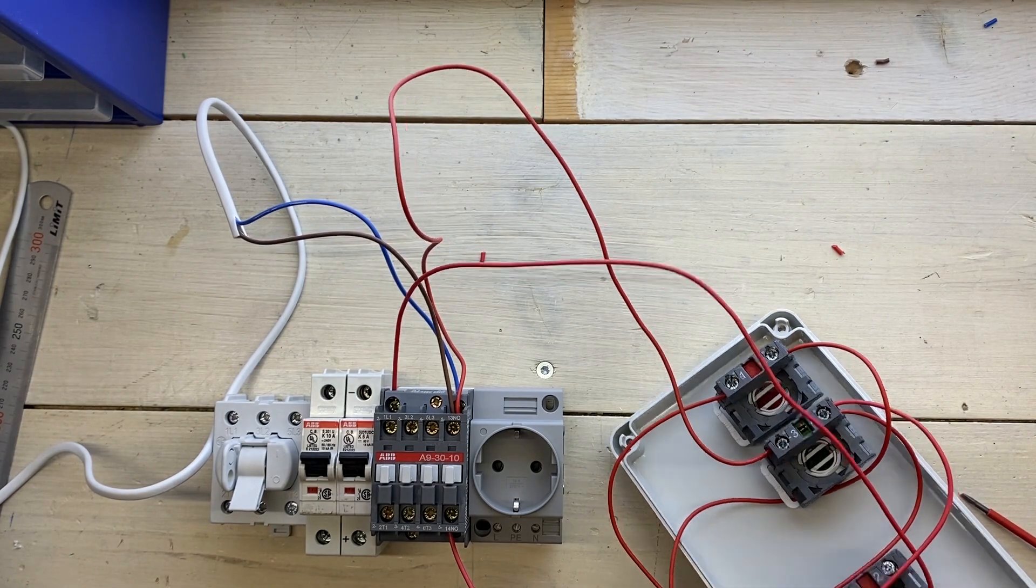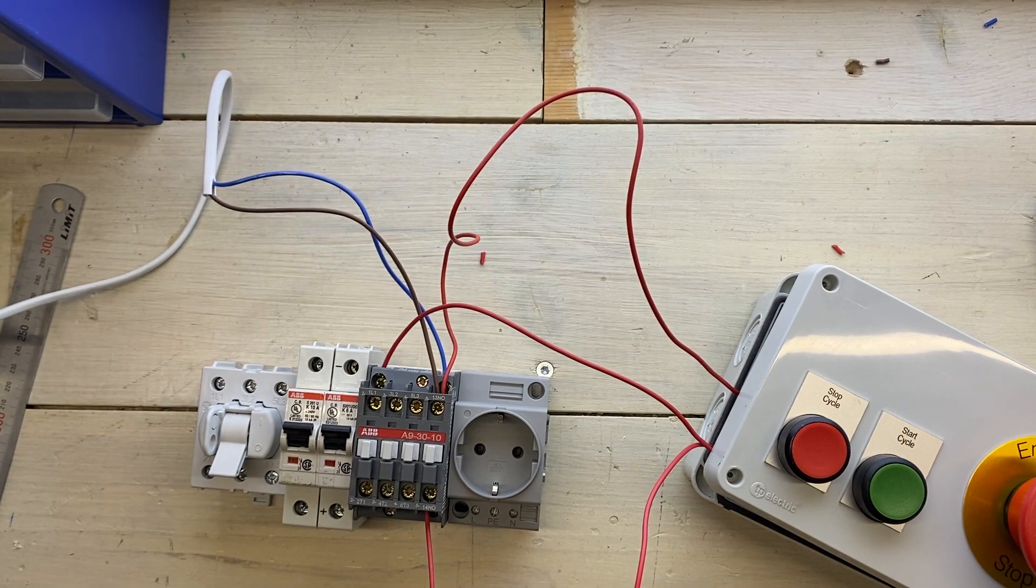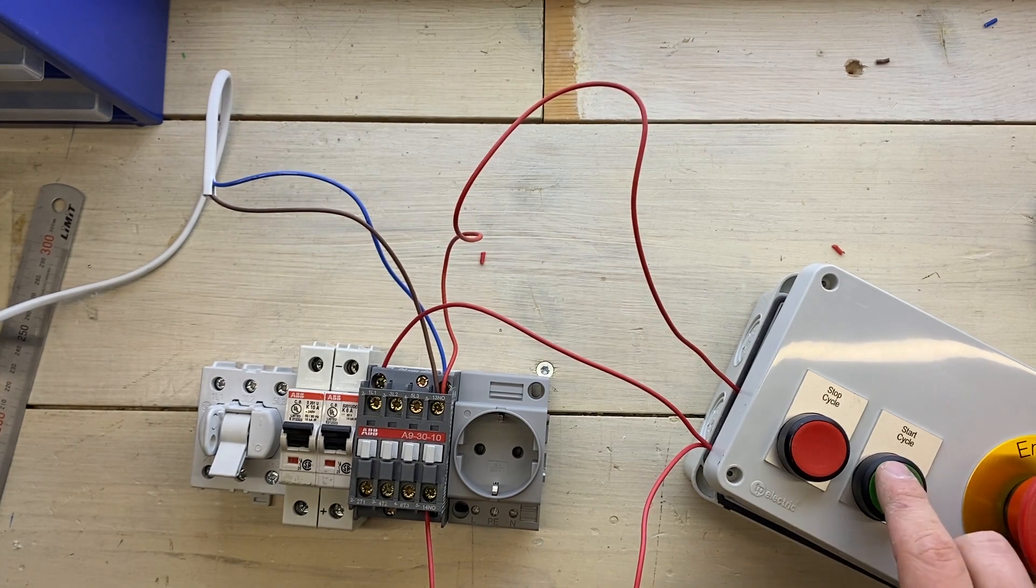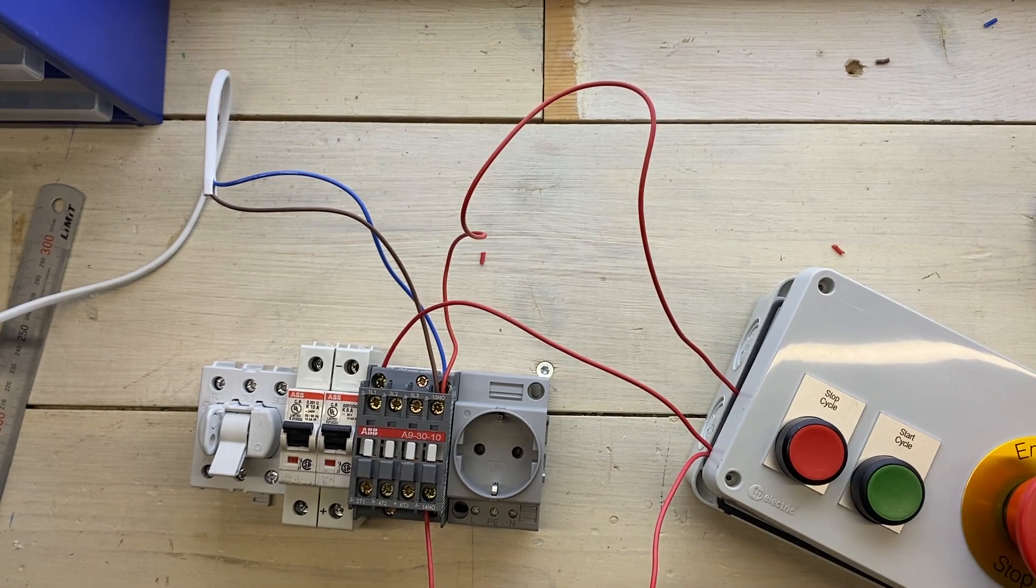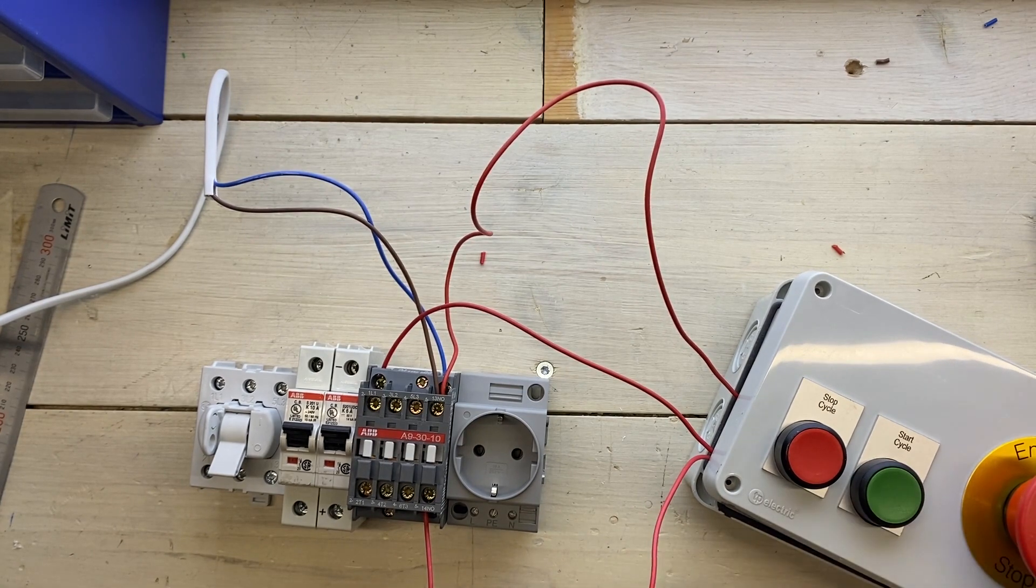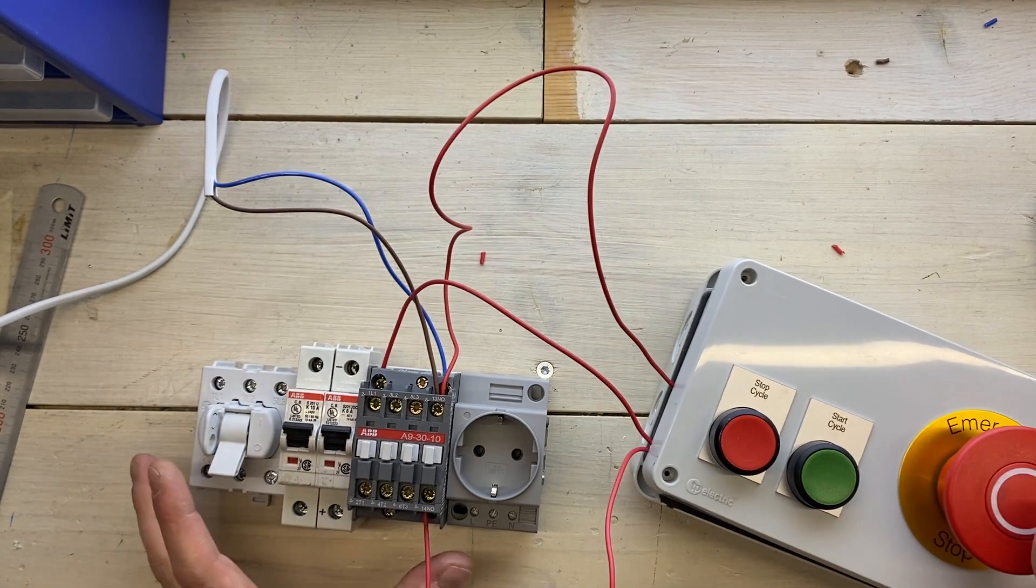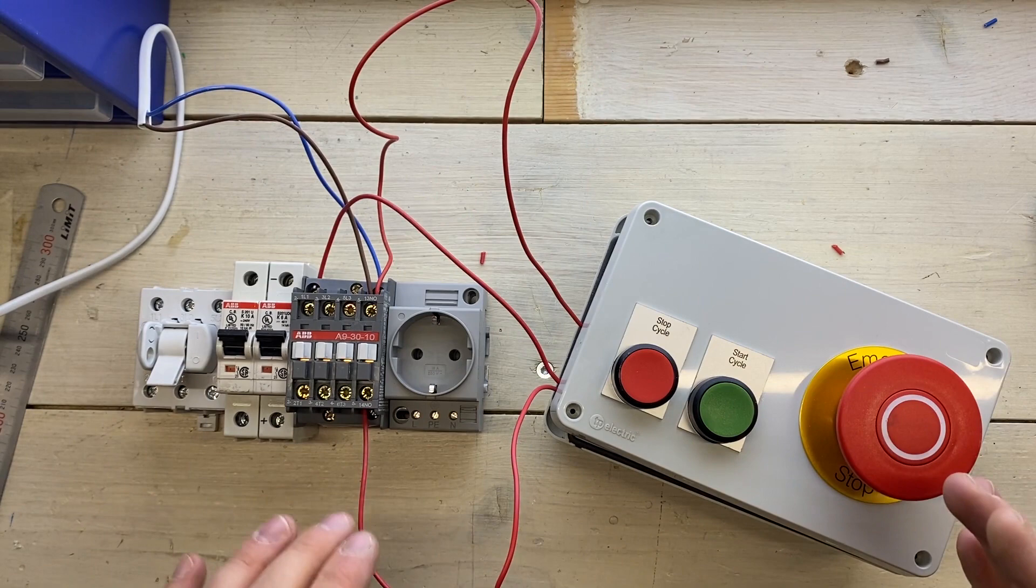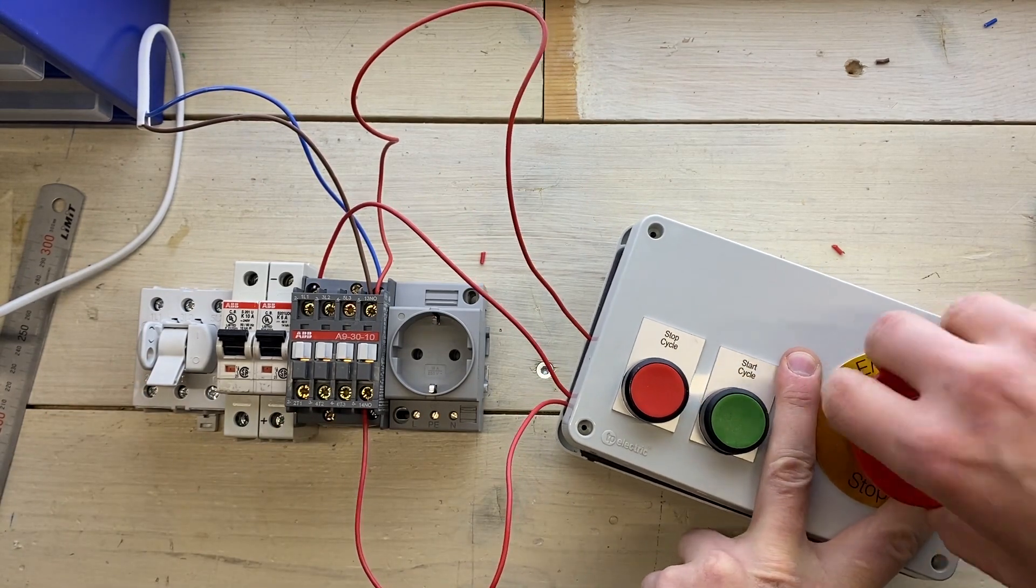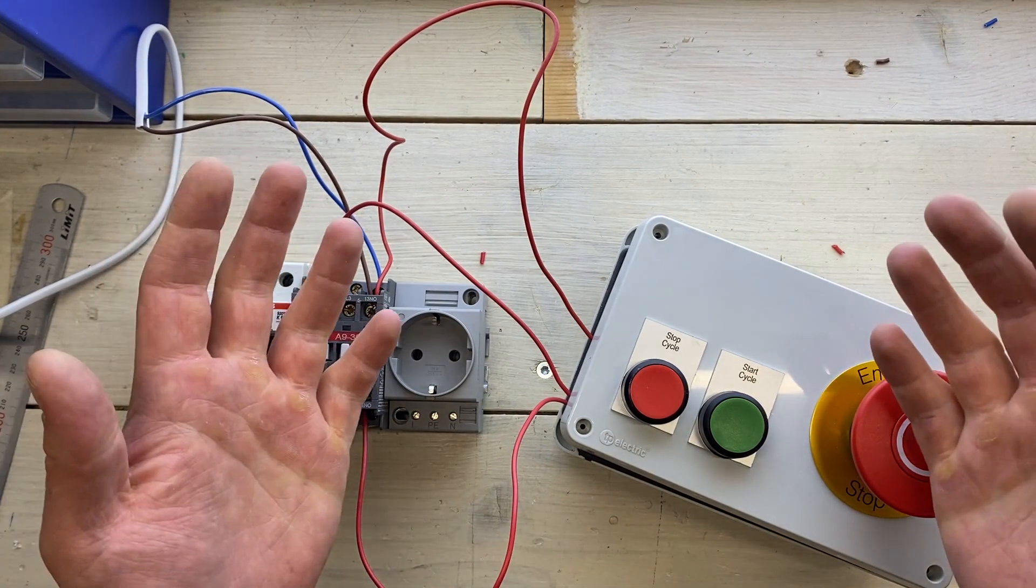So let's turn it on and see what happens. Hopefully nothing blows up. And if I push the start button, the contactor should pull. And if I push the stop button, it should release. And the same thing. If I push the start button, it pulls. And if I push the e-stop, it releases. And now the important thing is that to reset this circuit and actually get the contactor to pull again, I have to both reset the e-stop and push the start button. And that is how a safety circuit should work. Ta-da!